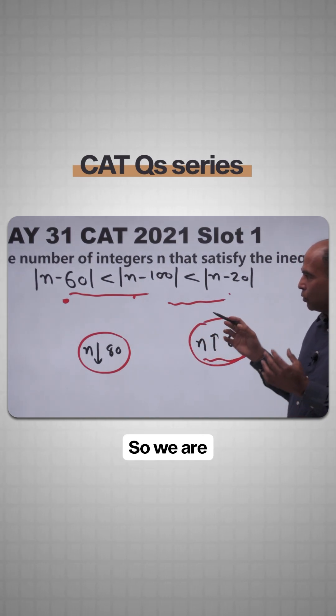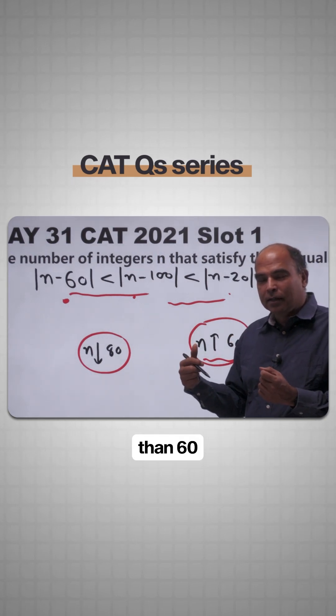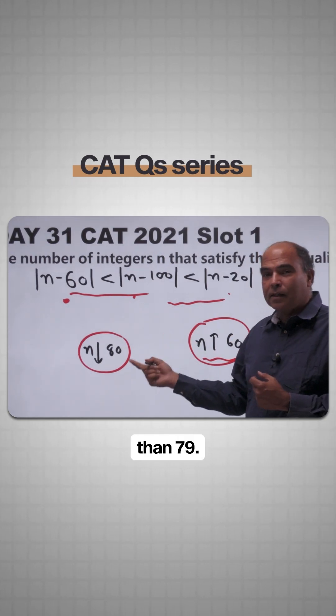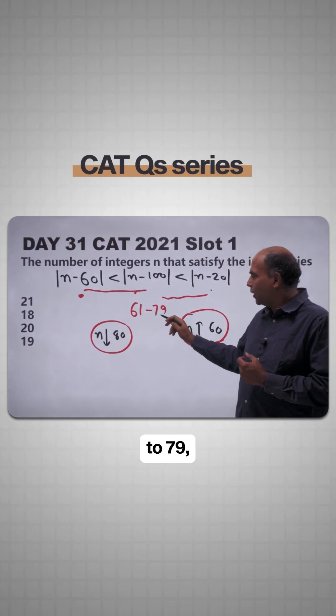So we are looking for the number of integers which satisfy both these: n greater than 60 and n less than 80. So the answers are all the integers from 61 to 79.